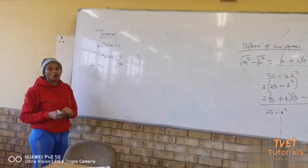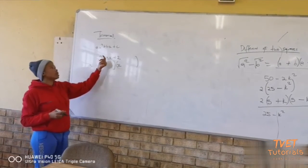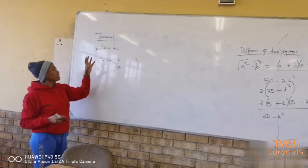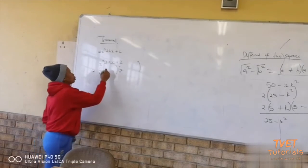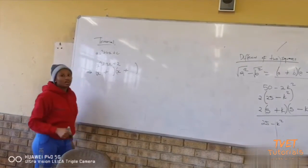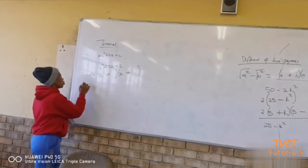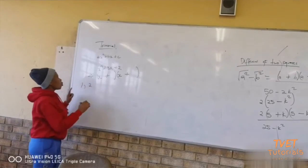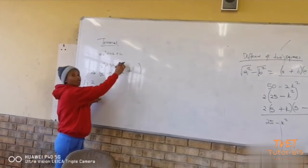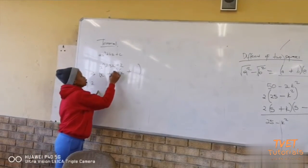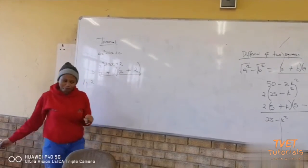We check the sign of the middle term. The sign of the middle term is positive, which means we put positive and positive inside the brackets. Then we find the factors of the last term, which is 2. Factors are 1 and 2. 1 plus 2 gives us 3, which is our middle term. So the answer is x plus 1 into x plus 2.